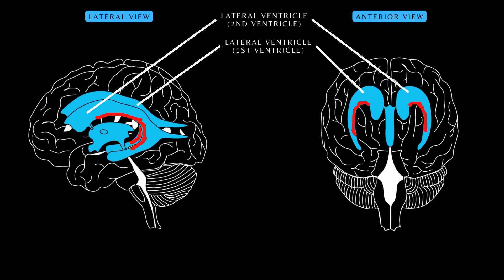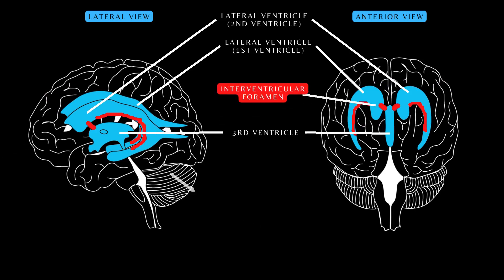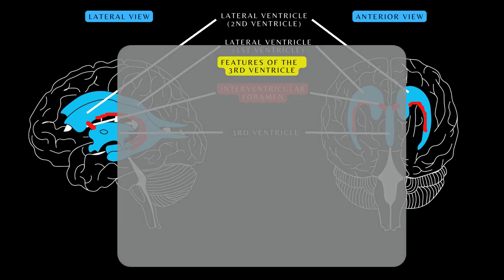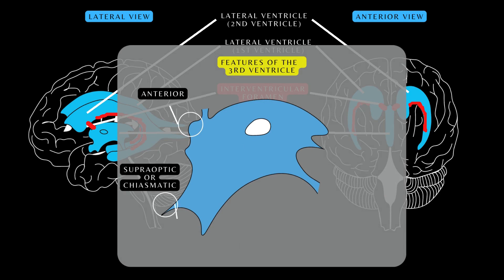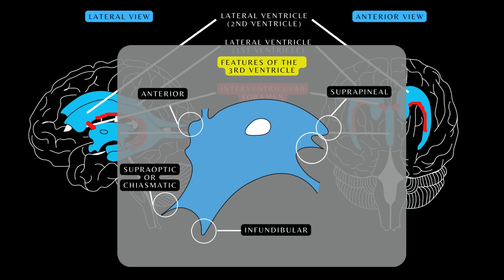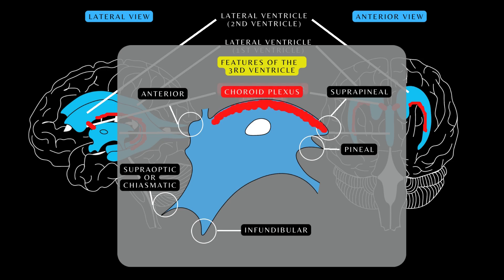Here is the third ventricle, located in the diencephalon. It is connected to the lateral ventricles by the interventricular foramina, also called the foramina of Monroe. Let's look at the features of the third ventricle that are easily identifiable on this diagram — the five recesses. Anteriorly is the anterior recess, also called the vulva of the ventricle, the optic or chiasmatic recess, and the infundibular recess. Posteriorly are the pineal and suprapineal recesses. Located in the roof of the third ventricle is the choroid plexus.